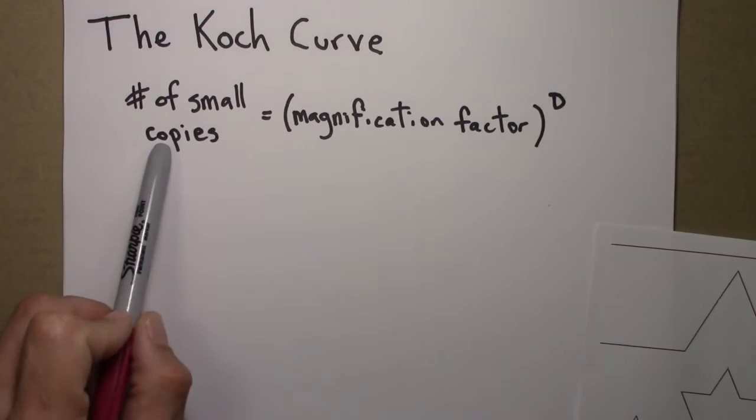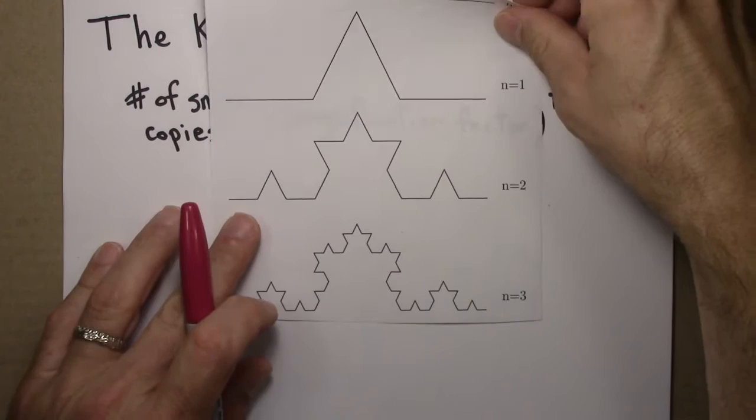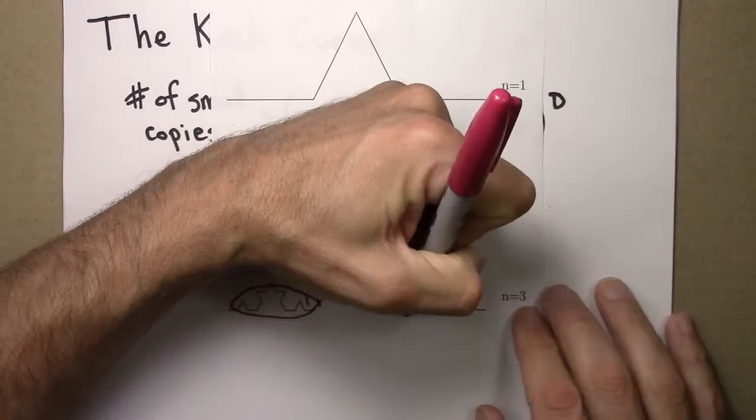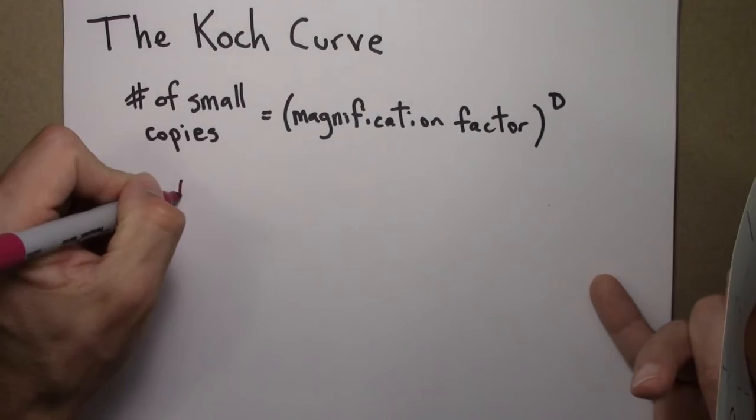So first let's think about the number of small copies. I'll look at the bottom figure, and I see four small copies: one, two, three, and four. So the number of small copies is four.